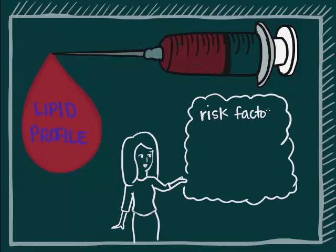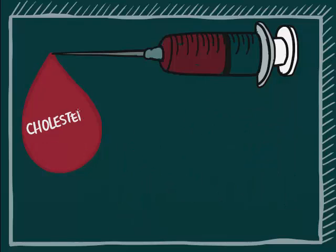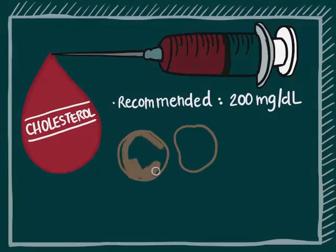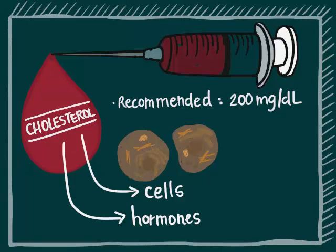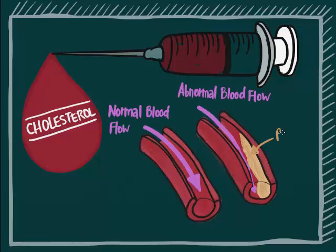Lipid profile — it tells you if you have a risk factor for developing heart disease. A panel of tests includes total cholesterol, with a recommended level under 200 mg per deciliter. Your body uses cholesterol to help build cells and make hormones. Too much cholesterol in the blood can cause formation of plaques on the walls of your blood vessels and increase your chances of having a heart attack or stroke.